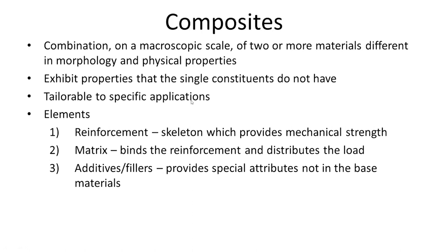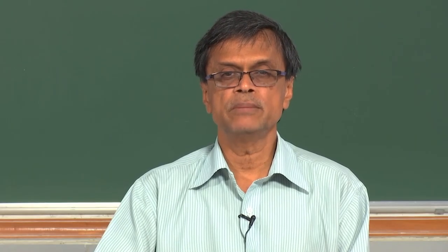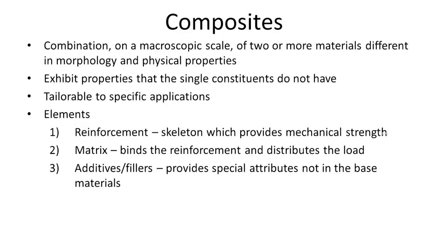We can change the composition of the fiber — for example carbon nanofiber or glass beads in a polymer. The reinforcement provides mechanical strength; the matrix (the polymer) binds the reinforcements and distributes the load. For instance, 1% fiber in 99% PMMA — the matrix distributes the load. Sometimes we add additives and fillers, such as surfactants or hydrophilic polymers, to improve mixing of the inorganic with the polymer.